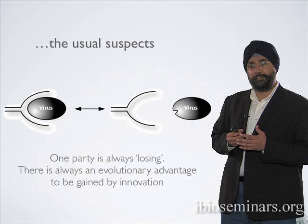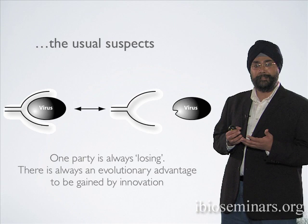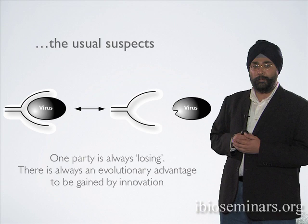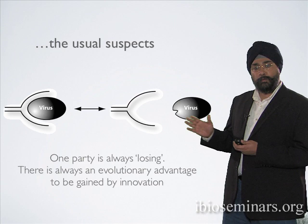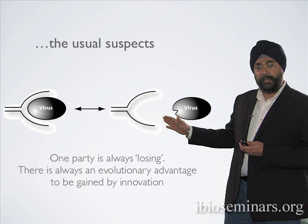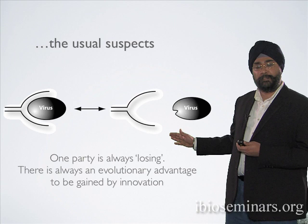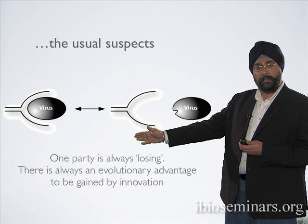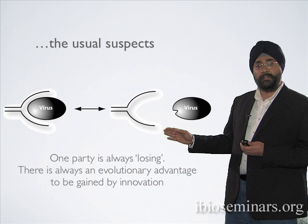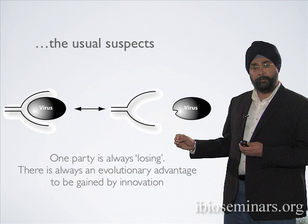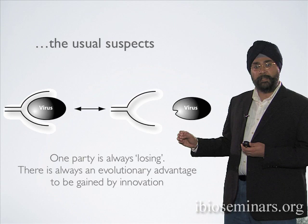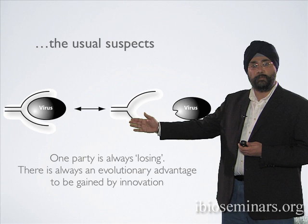If you consider a host-virus interaction, this is an interaction that screams out genetic conflict — what we refer to as the usual suspects. What is in the best interest of the virus will not always be in the best interest of the host. In this cartoon example, you can see two states: the host binding the virus on one side, and the virus that has evolved a mutation to evade recognition by the host immune system. These state transitions are profound but mechanistically very simple — it might take just a single amino acid mutation for the virus to gain one step ahead.